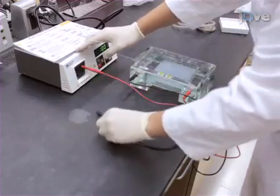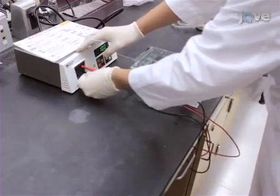Attach the leads of the gel box to the power supply and turn on the power supply. Verify both the gel box and the power supply are working. The appearance of bubbles at the electrodes indicates that current is passing through.